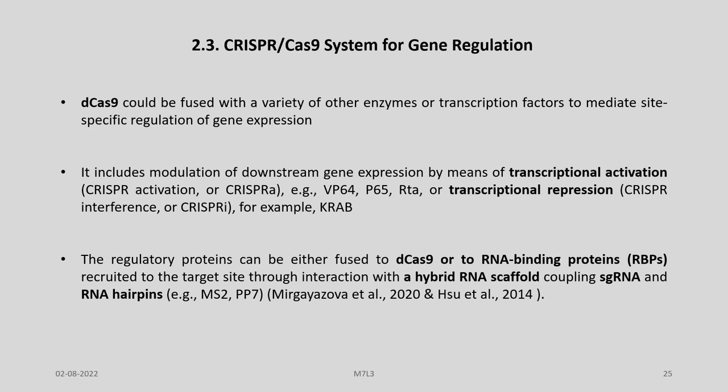Another area in which the modified CRISPR-Cas9 system is used is gene regulation. Dead Cas9 can be fused with a variety of enzymes or transcription factors to mediate site-specific regulation of gene expression, which includes modulation of downstream gene expression by means of transcriptional activation — called CRISPR activation or CRISPRa — for example VP64, P65, RTA — or transcriptional repression, called CRISPRi or CRISPR interference, for example KRAB. The regulatory proteins can be either fused to dCas9 or to an RNA-binding protein recruited to the target site through interaction with a hybrid RNA scaffold.